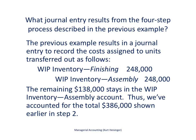The result of all of this work is a journal entry. We are taking the $248,000 and crediting it out of work in process inventory for the assembly department, and moving that $248,000 into the work in process inventory account for the finishing department. The remaining $138,000 stays in work in process inventory in the assembly department and will carry over into the next month. It's very important to point out that we've accounted for the entire $386,000 — part is being moved over into finishing, and part stays in assembly.